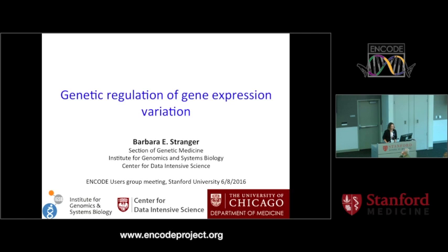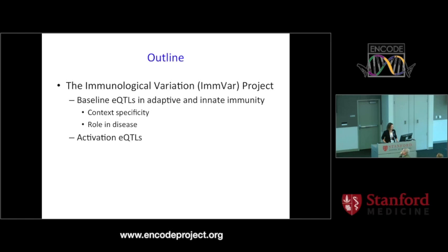Thank you, it's a real pleasure to be here. I've been working on the genetics of gene expression regulation for a while, and I'm going to tell you about one particular project in immunology. The project is the immunological variation project, and I'm going to tell you about QTL mapping in baseline cells but also in activated cells representing adaptive and innate immunity. We're looking at context specificity of associations — what does a particular polymorphism do, and does that function change with context?